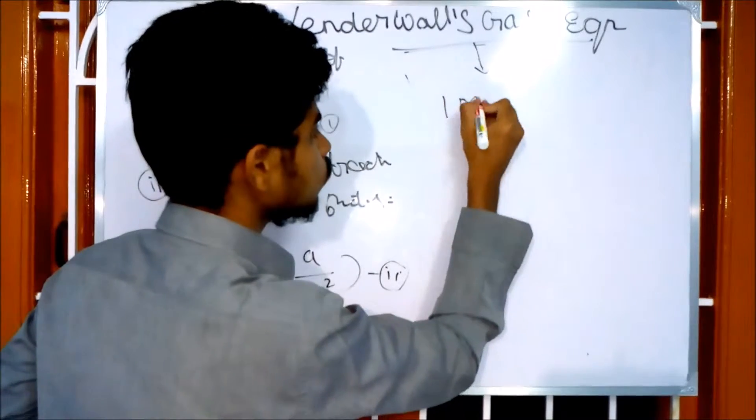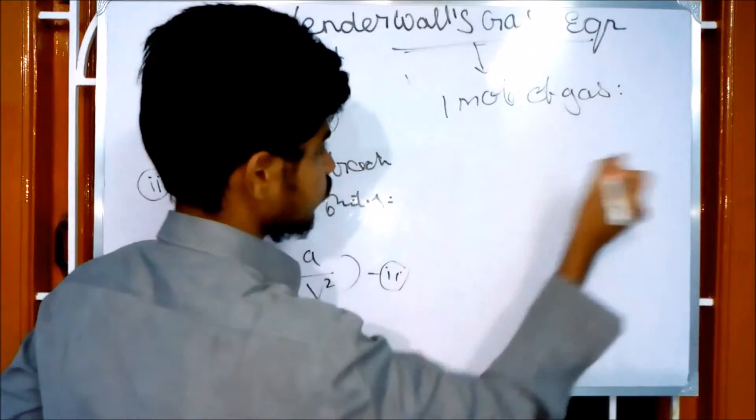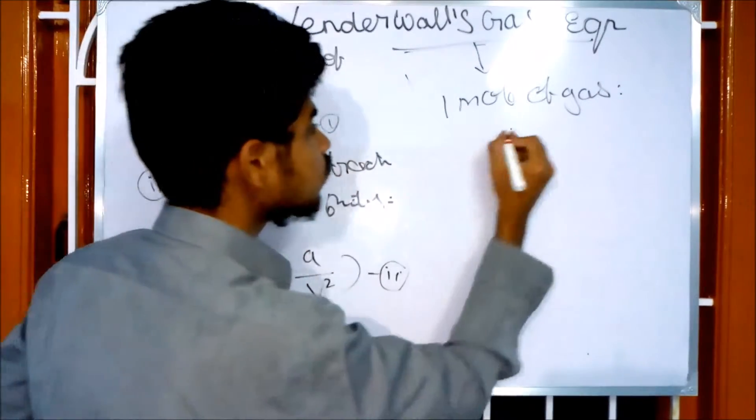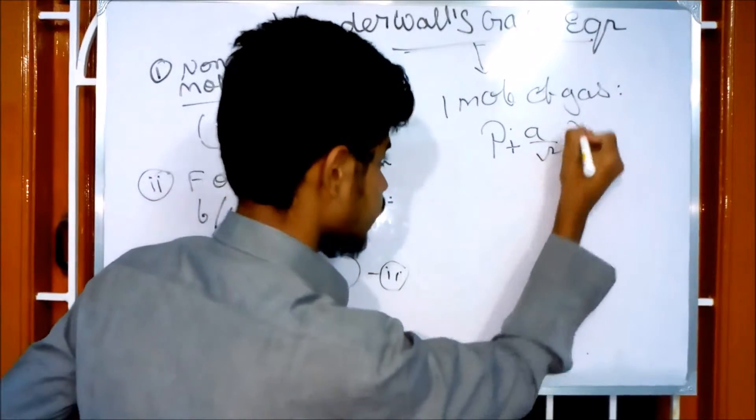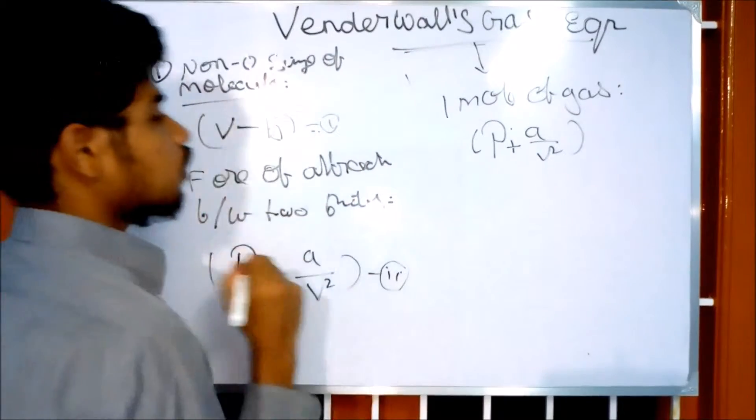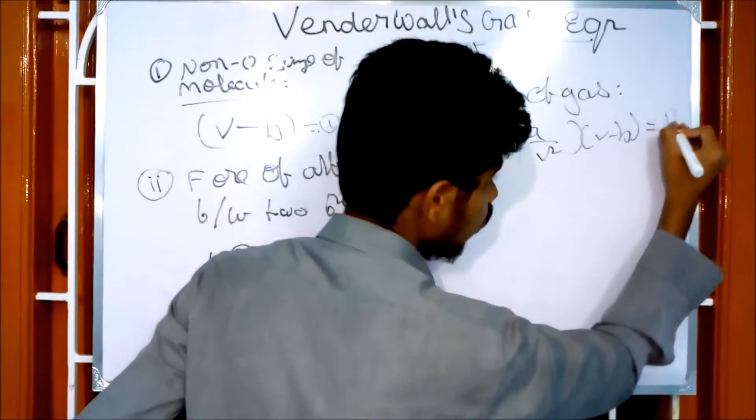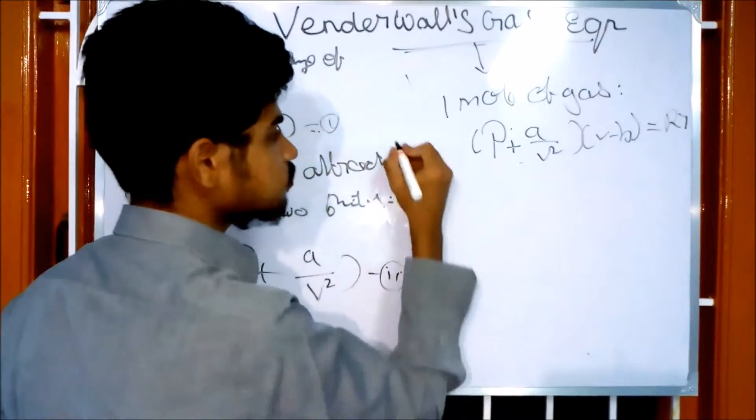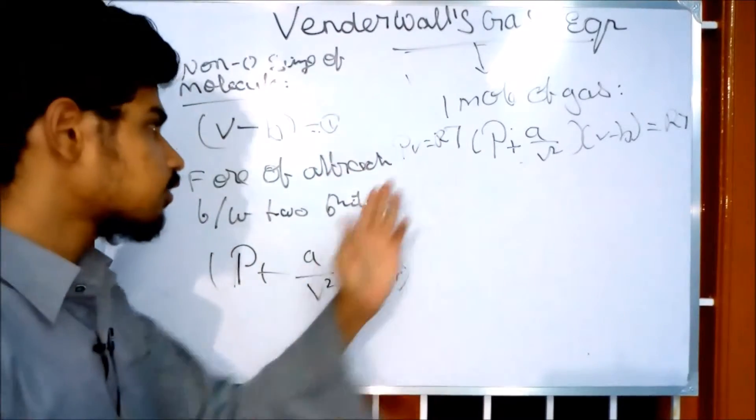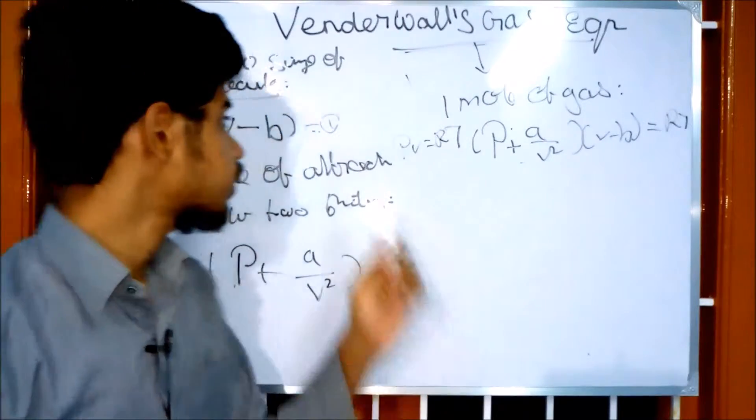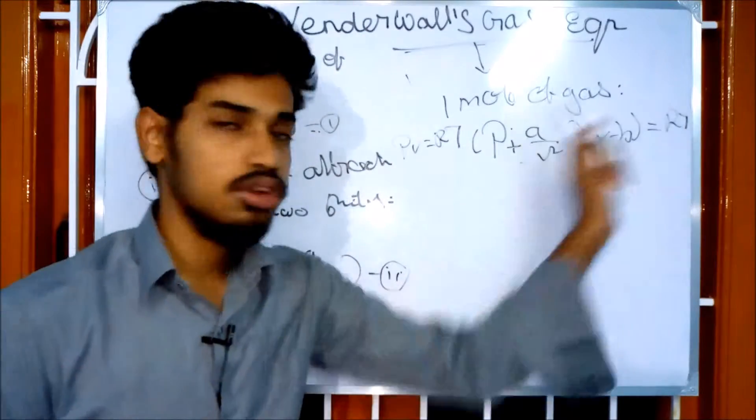First, for one mole of gas, the formula for an imperfect gas is: (P + a/V²)(V - b) = RT. This modifies the ideal gas equation PV = RT by adding the two correction terms for pressure and volume.